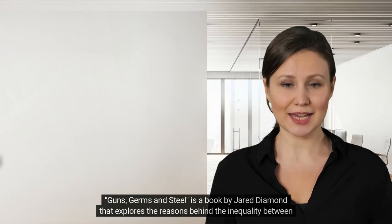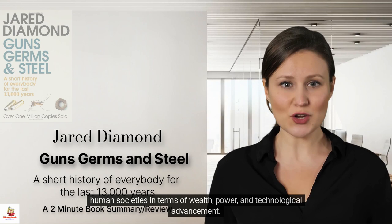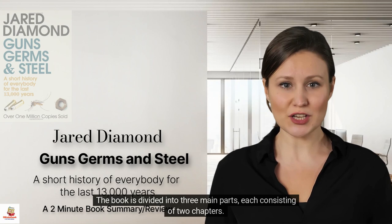Guns, Germs and Steel is a book by Jared Diamond that explores the reasons behind the inequality between human societies in terms of wealth, power, and technological advancement. The book is divided into three main parts, each consisting of two chapters.